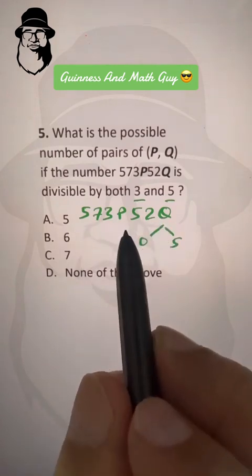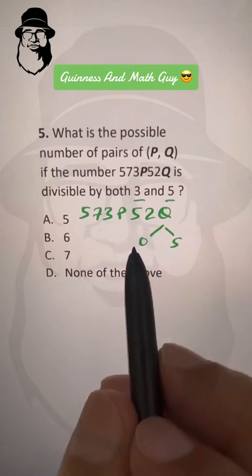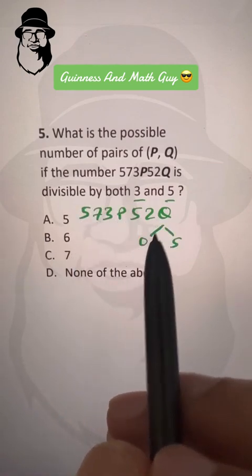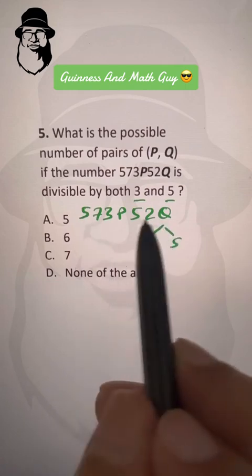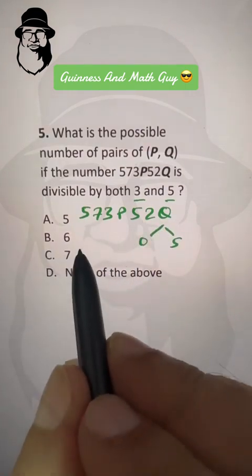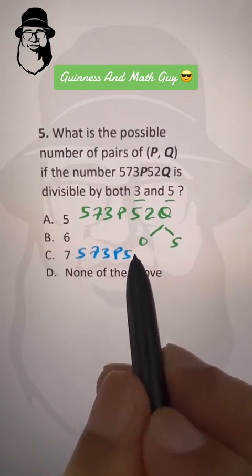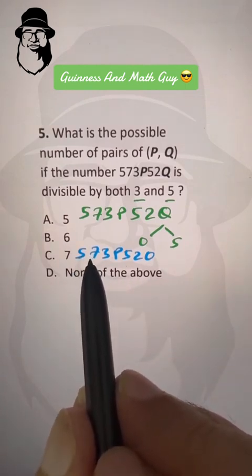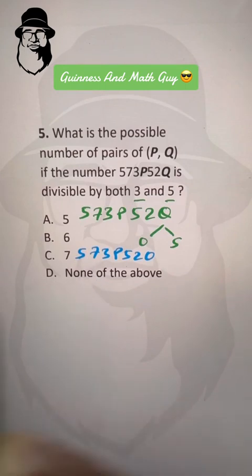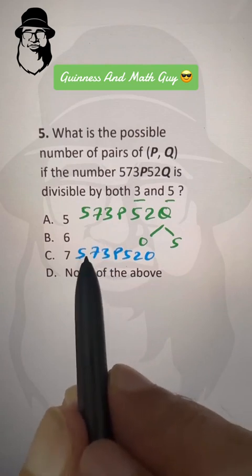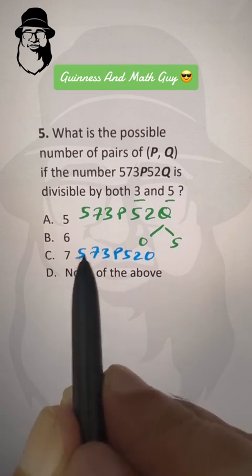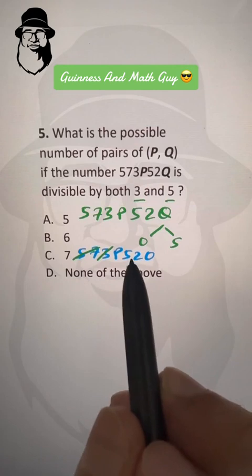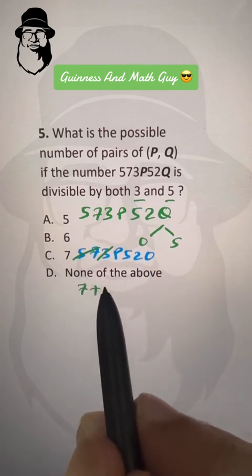When a number is divisible by 3, the sum of its digits must be in the 3 times table. If q is 0, the number becomes 5 7 3 p 5 2 0. Now, 5 plus 7 is 12, which is in the 3 times table — cross them out. 3 is also in the 3 times table — cross it. 5 plus 2 is 7, and 7 plus 0 is still 7, so we need 7 plus p to be divisible by 3.